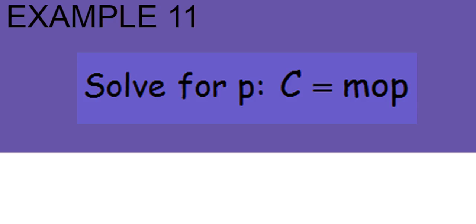Example 11: Solve for P. So we're going to move M and O. What are M and O doing to P? Multiplying.